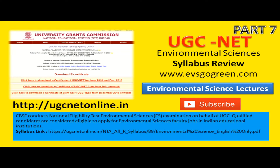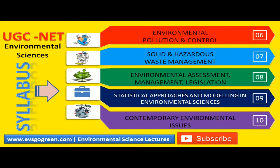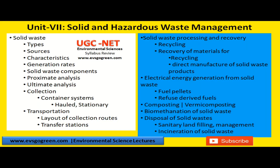Hello students, welcome to part 7 of UGC NET Environmental Sciences syllabus review, where we are reviewing the syllabus of each and every unit. There are 10 units in total — these are the first five units of the syllabus, and these are the next five units. Now we are going to review unit number seven, which is solid and hazardous waste management. This topic should, in my opinion, belong to unit six, but this is how they have framed the syllabus because there are completely different concepts here.